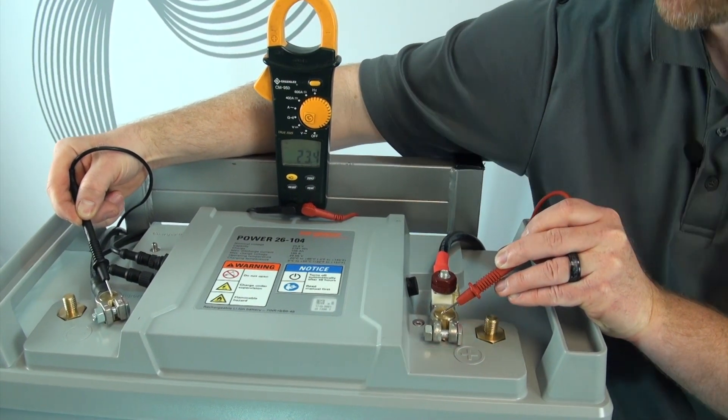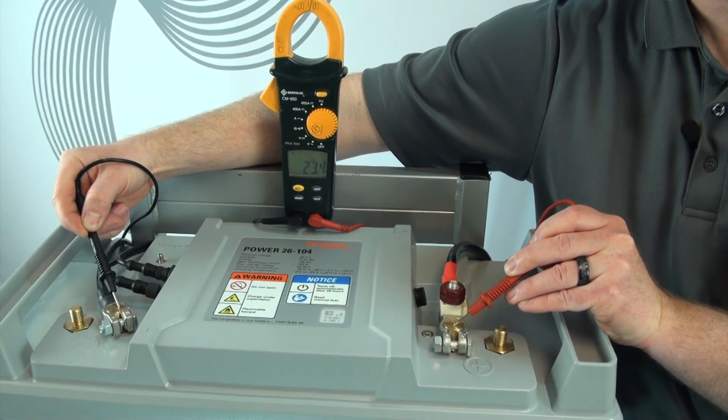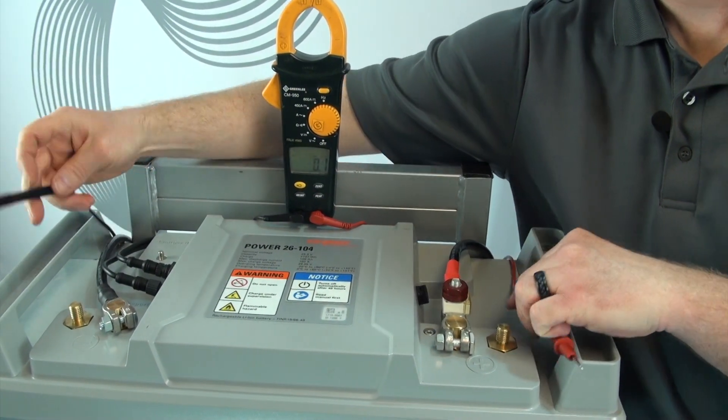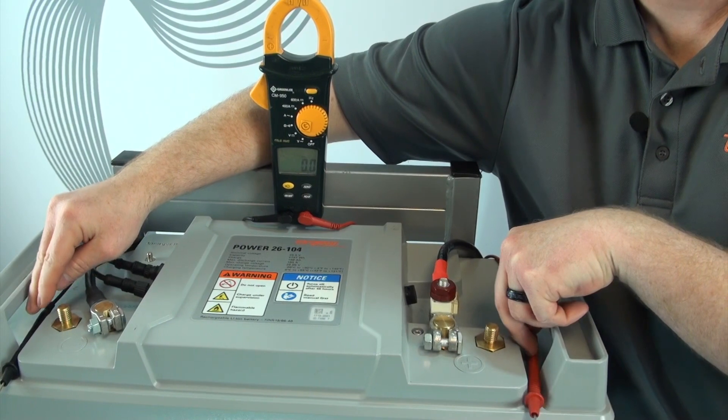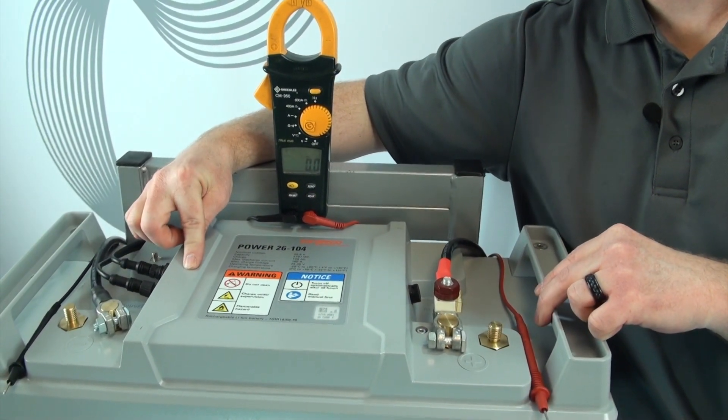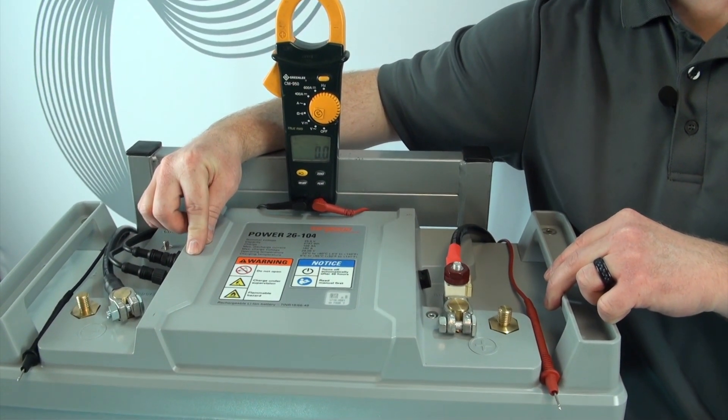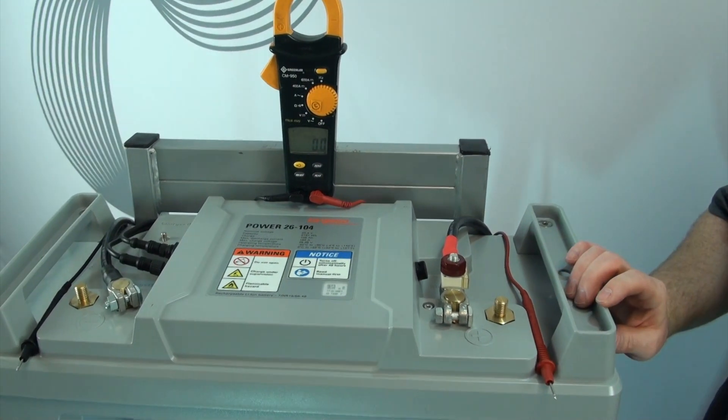And right now we're showing 23.4 volts on the external post. What we're going to do is shut down the internal BMS, the battery monitoring system, so it can go into storage mode and won't go into deep discharge.